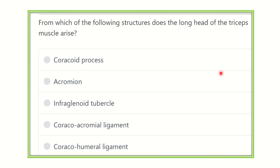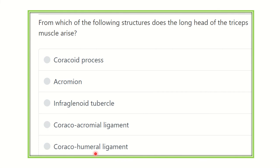Here is the question — read it carefully: 'From which of the following structures does the long head of the triceps muscle arise?' Triceps means three heads, so this muscle arises from three sources. The options are: coracoid process, acromion process, infraglenoid tubercle, coraco-acromial ligament, and coraco-humeral ligament.